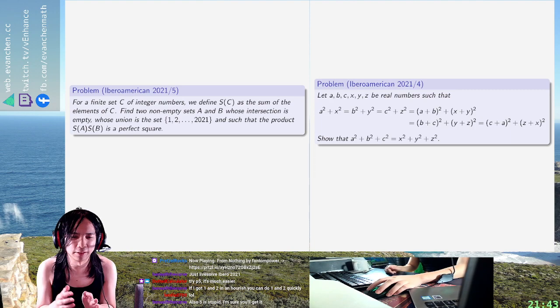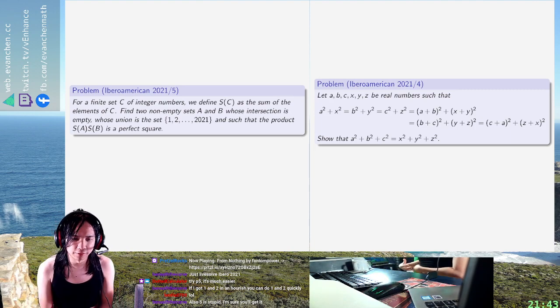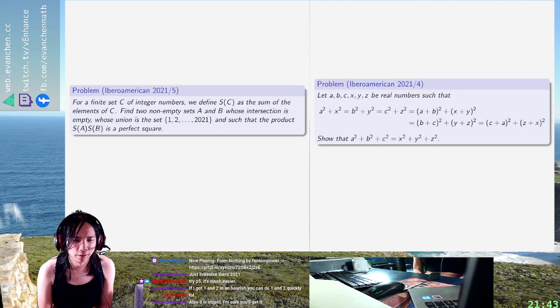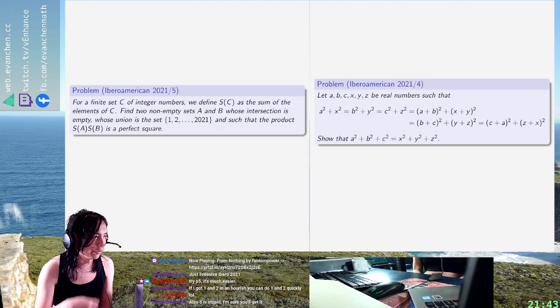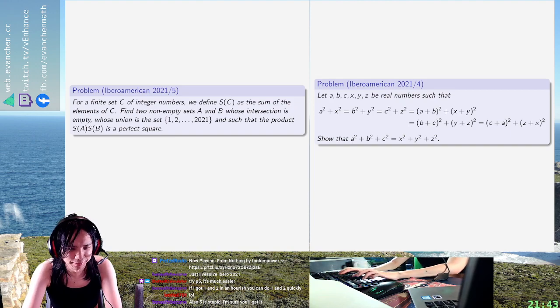In problem five you want to split one through 2021 into two sets such that their product is a square. However, you also know the sum is equal exactly to something.